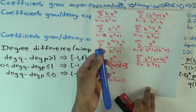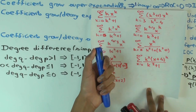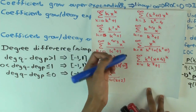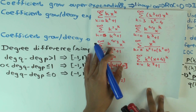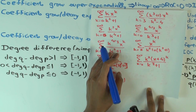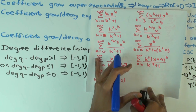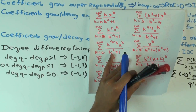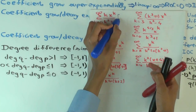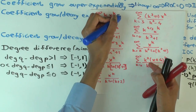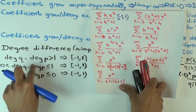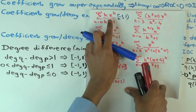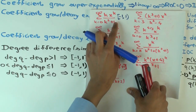Now let's try to do the interval of convergence. There are only four possibilities. Looking at the first example: what's the degree difference in this case? One. So which case do we land in? It's closed at minus one and open at one. At minus one, the alternating series theorem tells you it converges. At one, it doesn't converge.